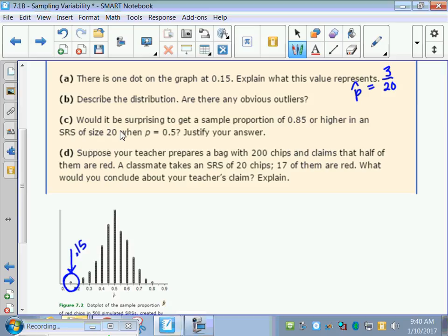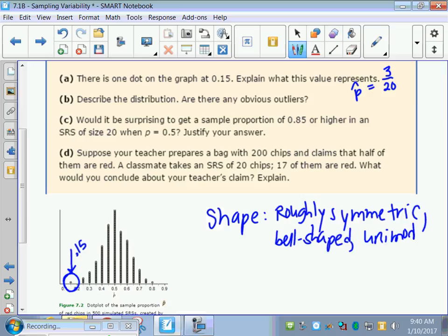Part B, describe the distribution. Are there any obvious outliers? Let's describe the distribution of 500 of these. The shape is roughly symmetric or bell-shaped, and it's unimodal. The center of our 500 samples is 0.5. The more we take, the closer it is to 0.5. Our center is about 0.5.